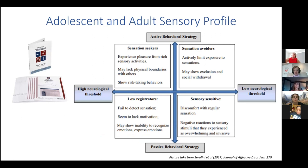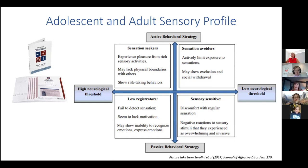The Adolescent and Adult Sensory Profile is currently the most widely used measure for an individual's unique sensory processing and behavioral responses. It puts information together into four areas across a neurological continuum — from people who require a lot of sensory input to really register information, to those on the other end of the spectrum whose sensitivity to sensory information is heightened.